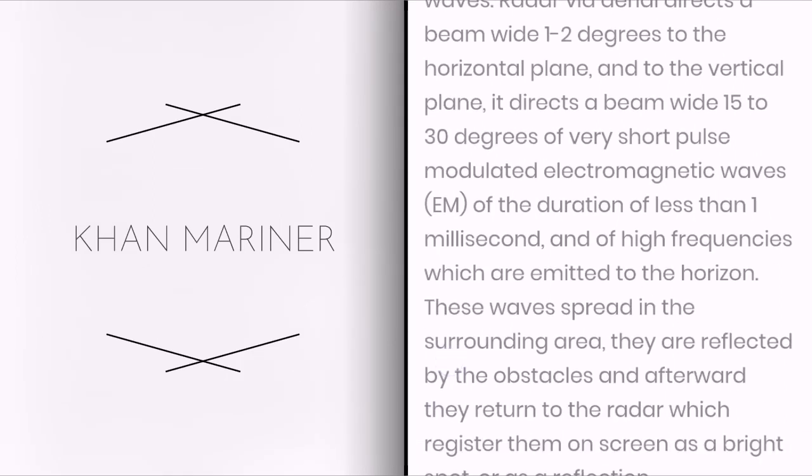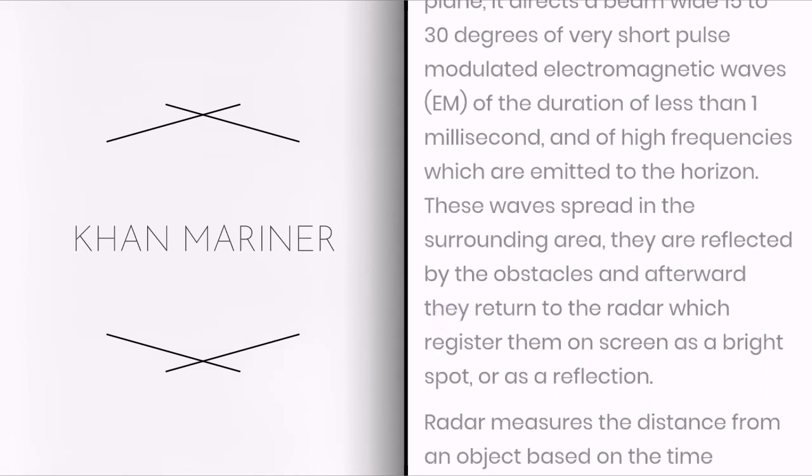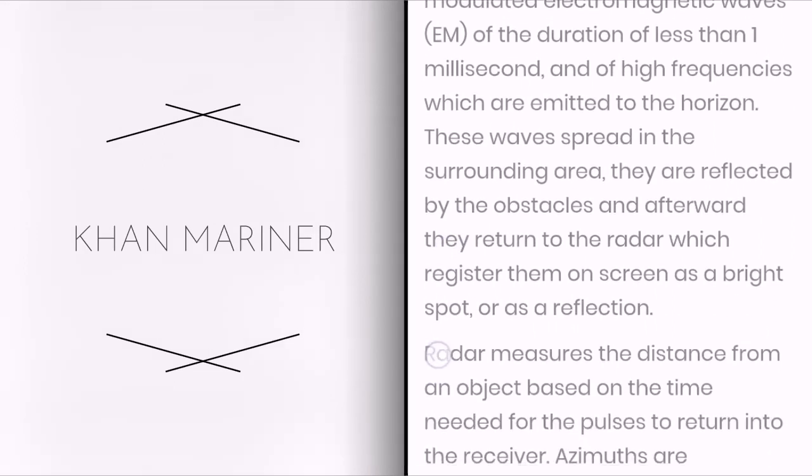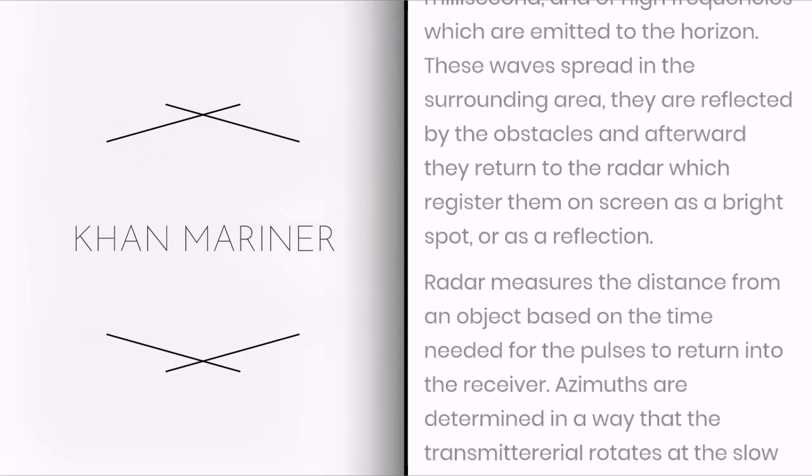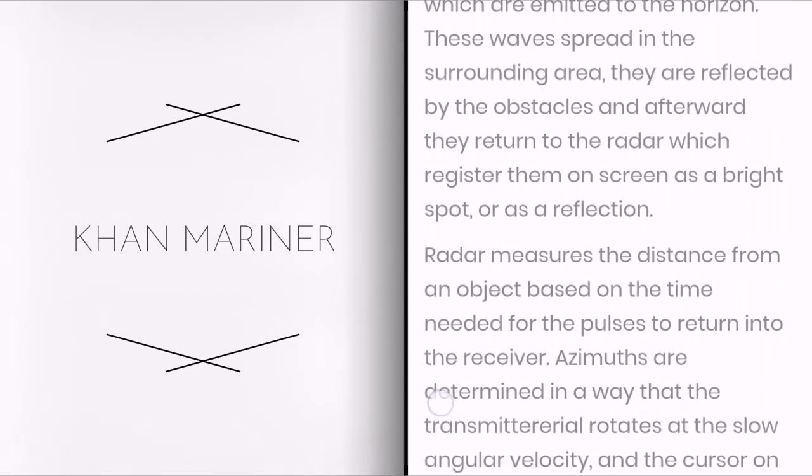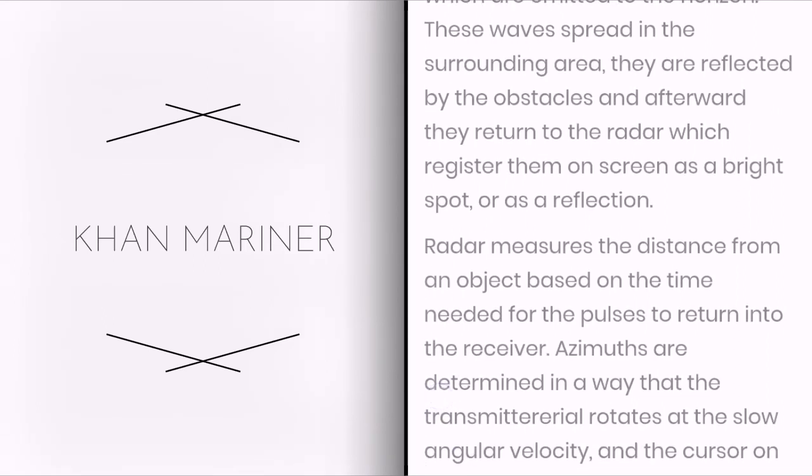These waves are emitted to the horizon and spread in the surrounding area. They are reflected by the obstacles and afterward they return to the radar which registers them on screen as a bright spot or as a reflection.